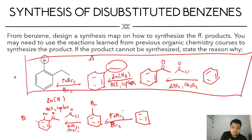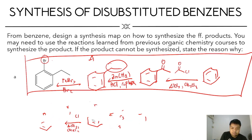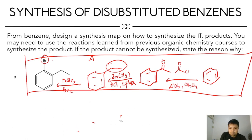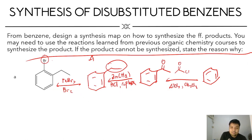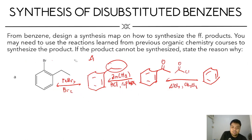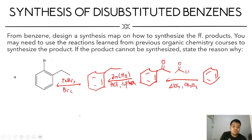Therefore, Pathway A is the better option. This is your final answer and your proposed synthesis — this is the most efficient synthesis route. If you have suggestions, just drop them in the comment section of this video.